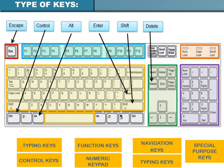The third type is function keys. The 12 function keys, F1 to F12, are arranged in a row at the top of the keyboard. Each function key has a unique meaning and is used for a specific purpose. The functionality of these keys can differ from program to program.